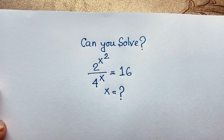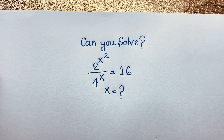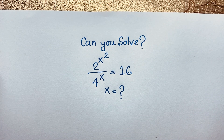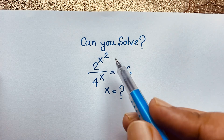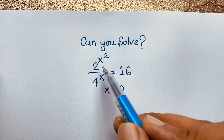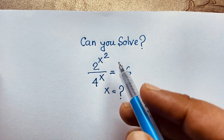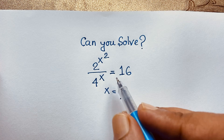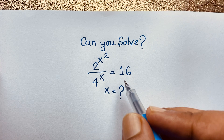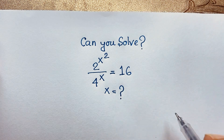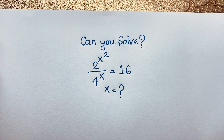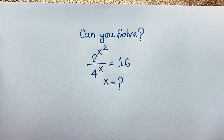Hello everyone, welcome to Russell's Classroom. Today we are solving an interesting exponential math problem, which is 2 to the power x squared over 4 to the power x is equal to 16. x is equal to what? How to solve this interesting math problem?